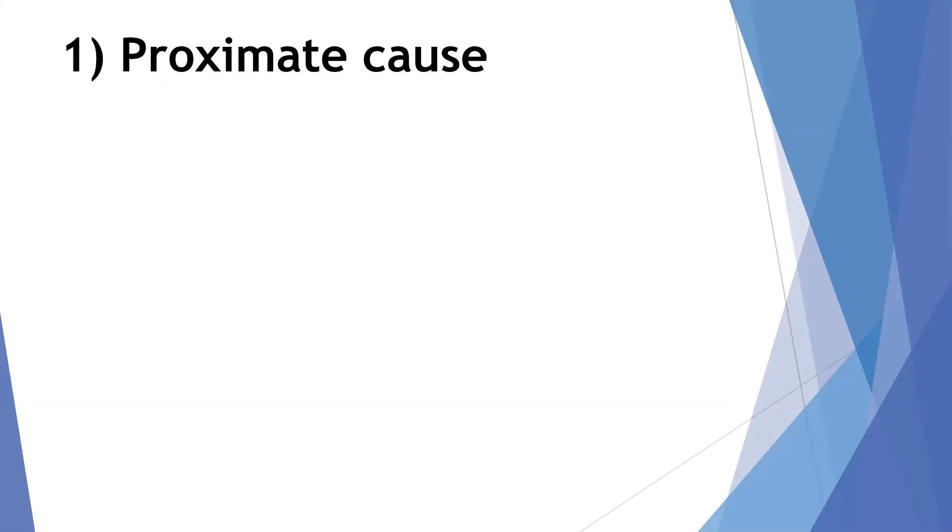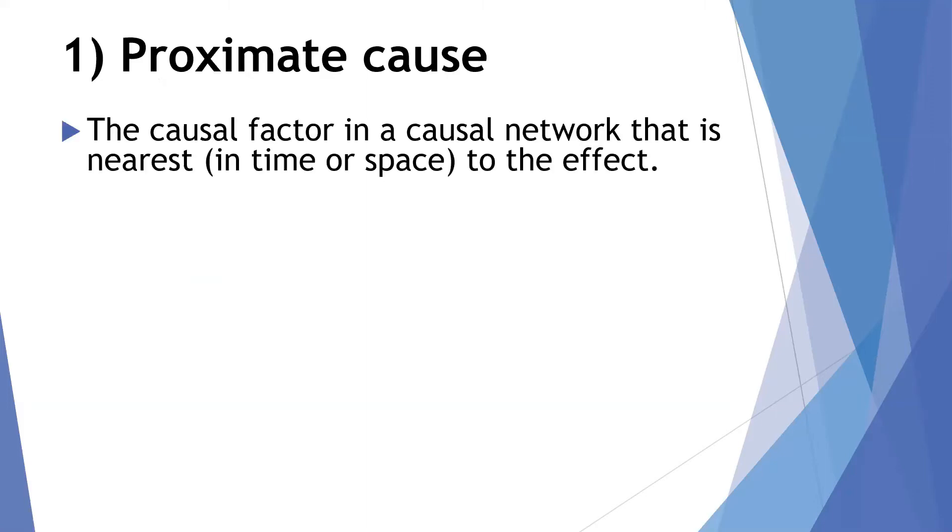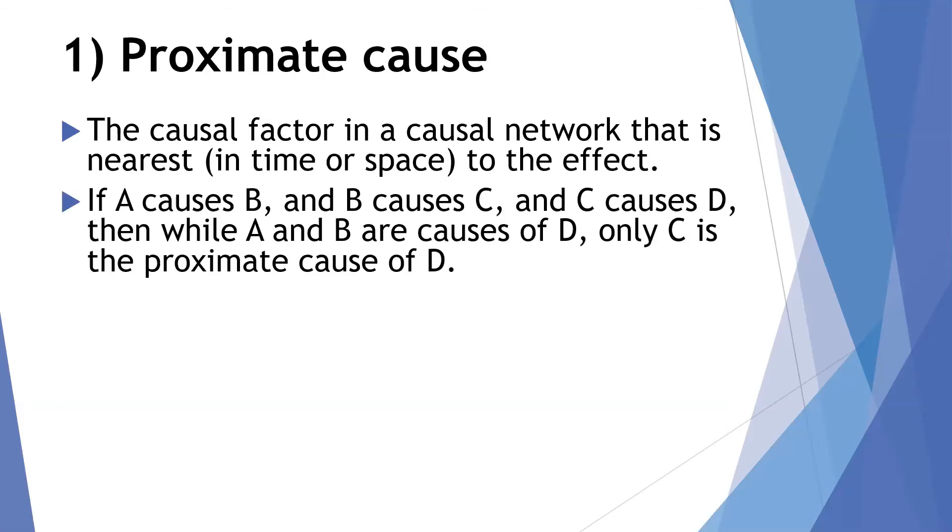So one is a proximate cause. This is the causal factor in a causal network that's the nearest in time or space to the effect. So we have a series of causes or a complex causal network that's bringing about an effect, and this is the last one. If A causes B, B causes C, C causes D, and we're making this linear, but it doesn't necessarily have to be linear.